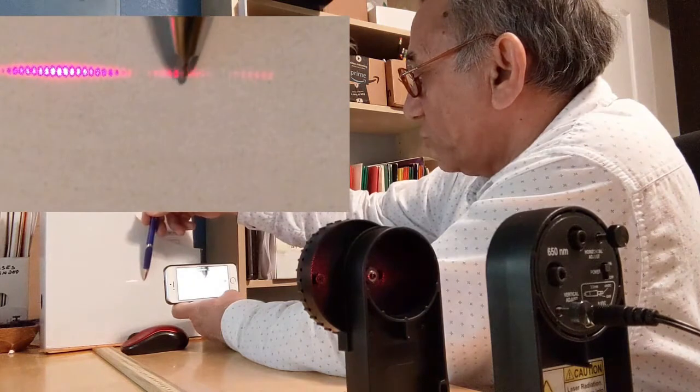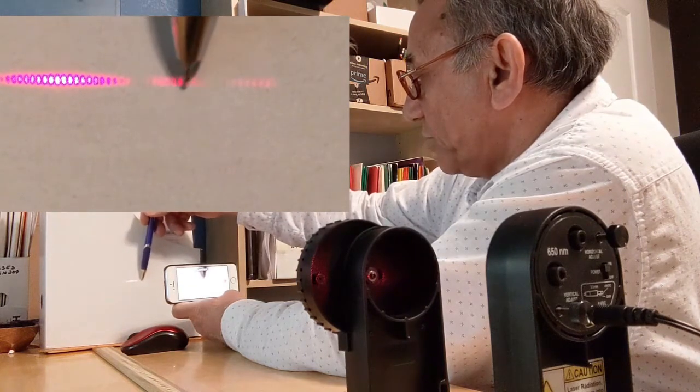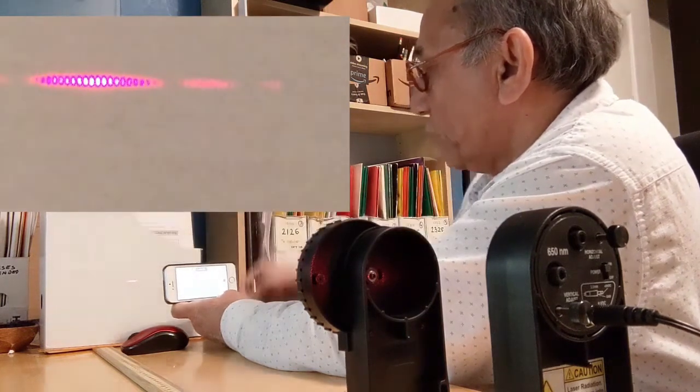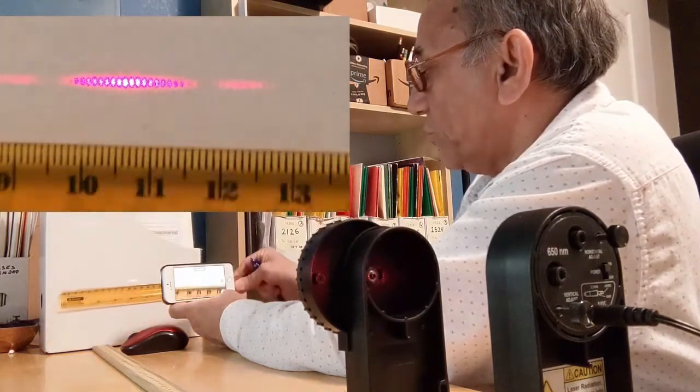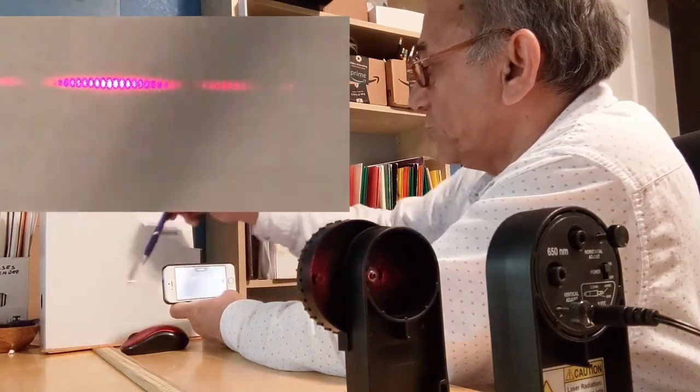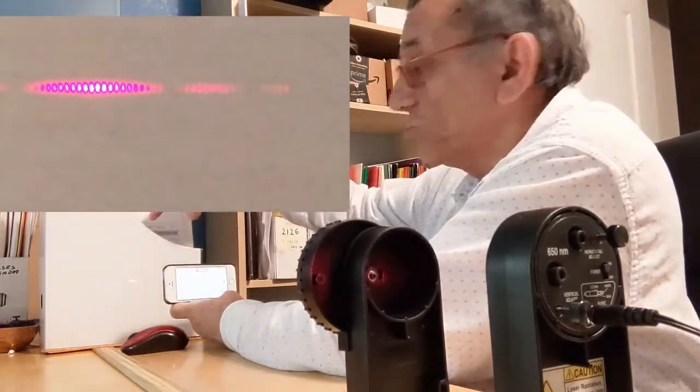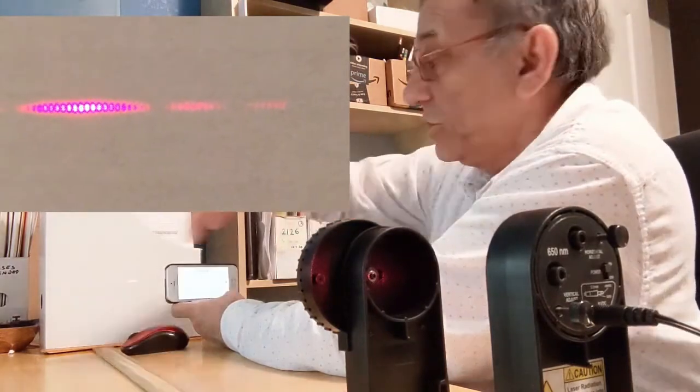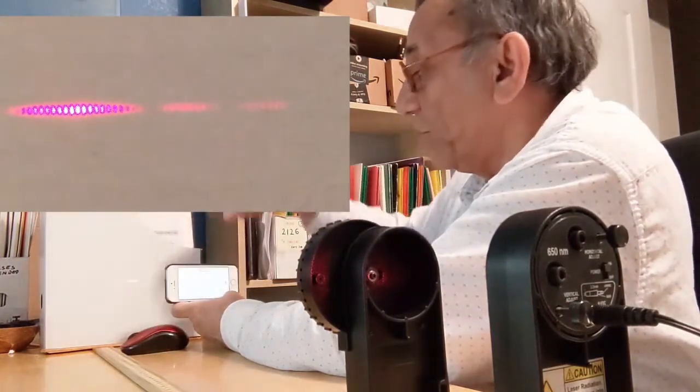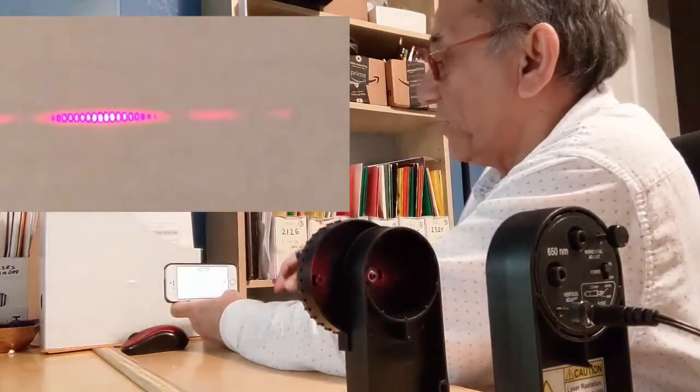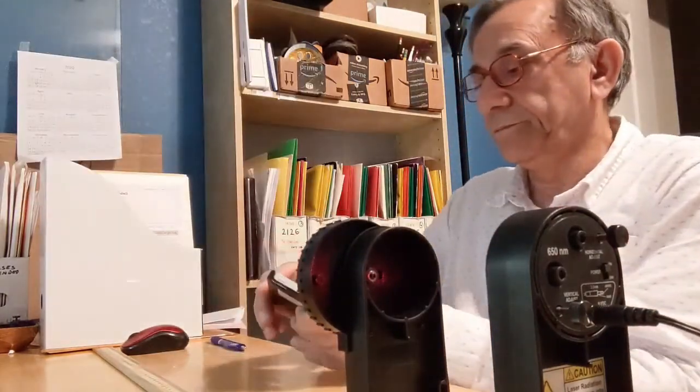OK, so this time we'll again put a ruler and measure the distance between these fringes, which is rather small. So we need to increase the distance from the slit up to here, that has to be made much bigger so that this gets wider, since the spacing between the orders of the interference patterns is too small when the distance is small. So we set the laser up here.